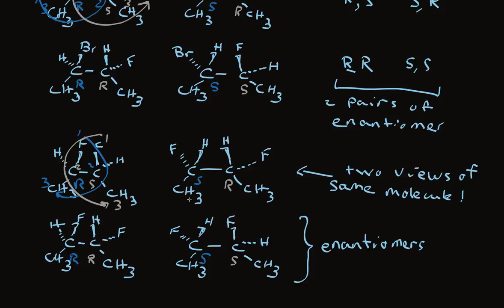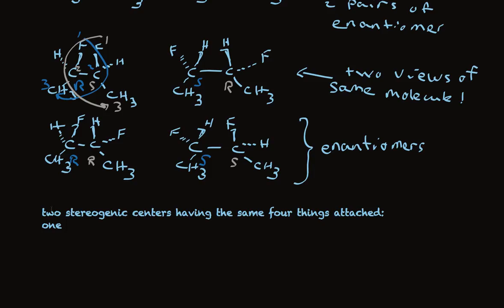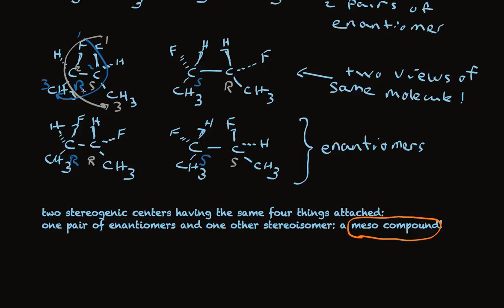This happens because both stereogenic centers have the same four things attached. There is one pair of enantiomers and one other stereoisomer, a meso compound. This is a very special stereoisomer. It has in its own molecule one R and one S absolute configuration of the stereogenic center having the same things attached. It is its own mirror image in the same molecule. Those two carbons, those two stereogenic centers, reflect into each other. So for that reason, when I make the mirror image of that, I have the exact same molecule.